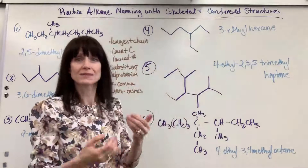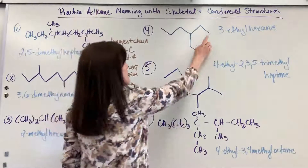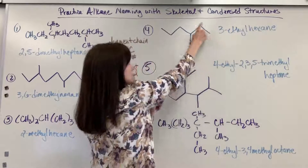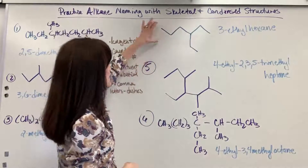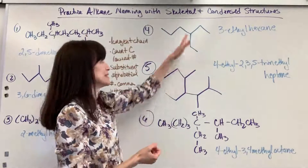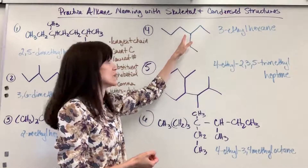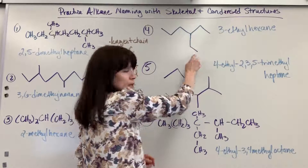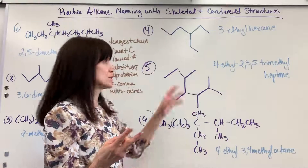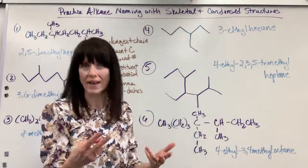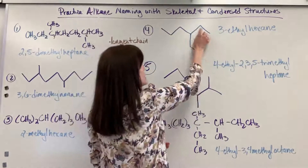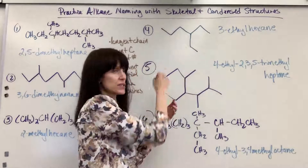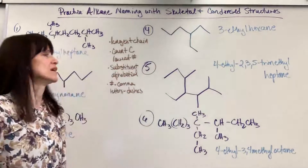I like the linear look, so let's do straight since we have an option on this one. Now let's count — how can we get the smallest number for the address we give the substituent? Counting from right to left gives us three, and from left would be four. Counting from right to left is going to give us our smallest substituent number. So on the third carbon we have two carbons — that's an ethyl group. Our longest chain is hexane — three-ethylhexane.